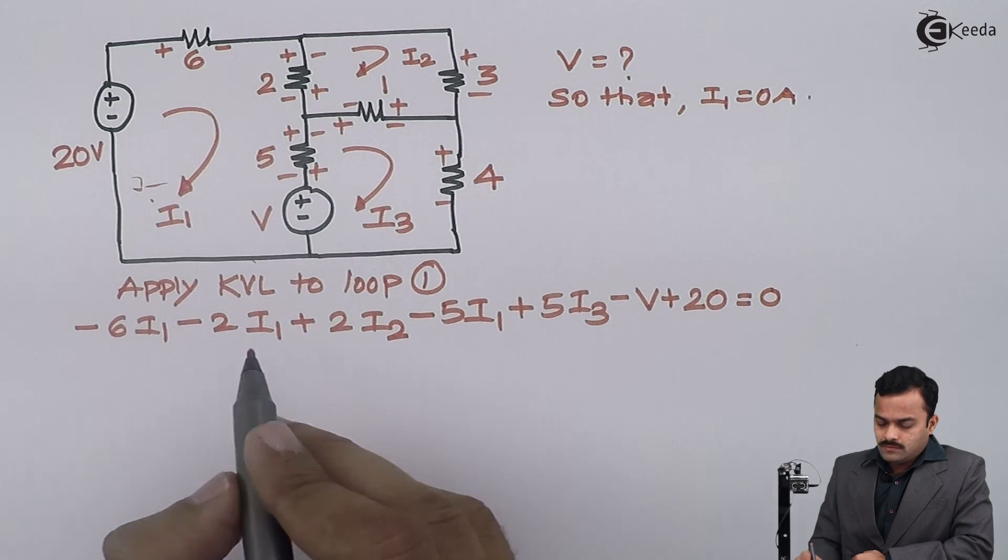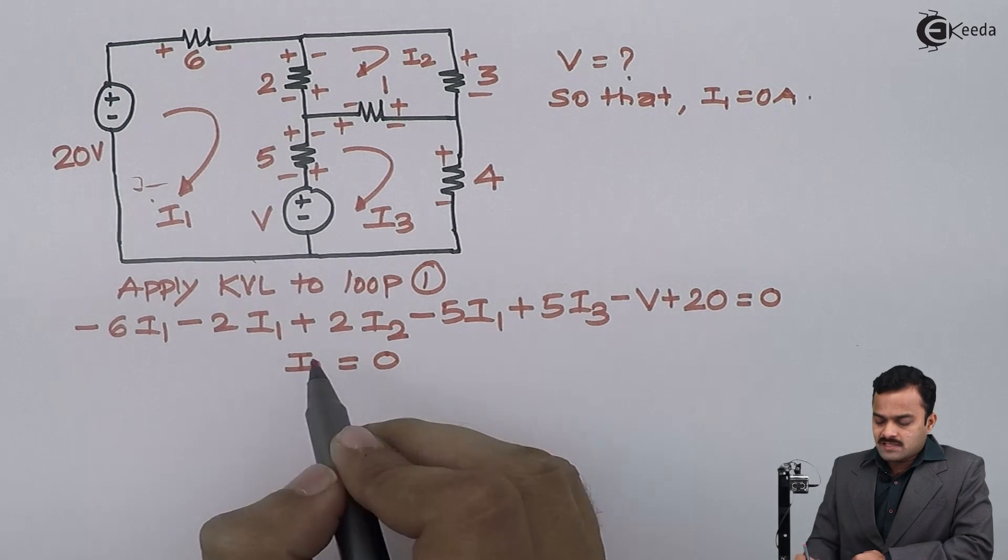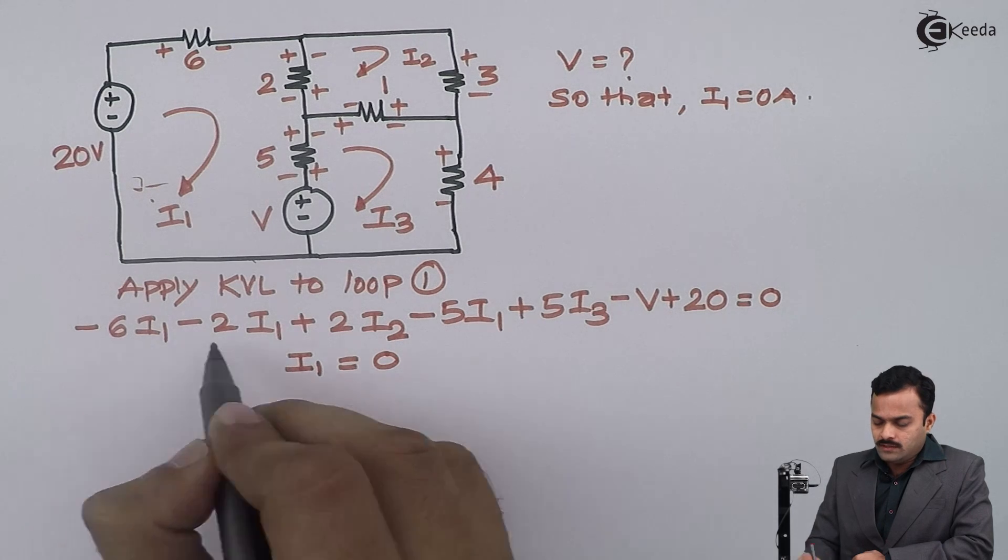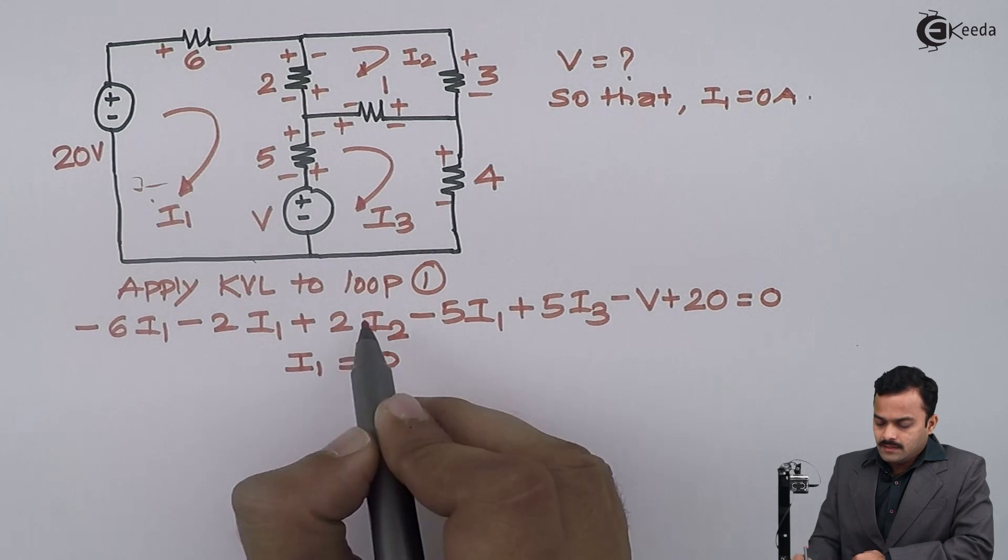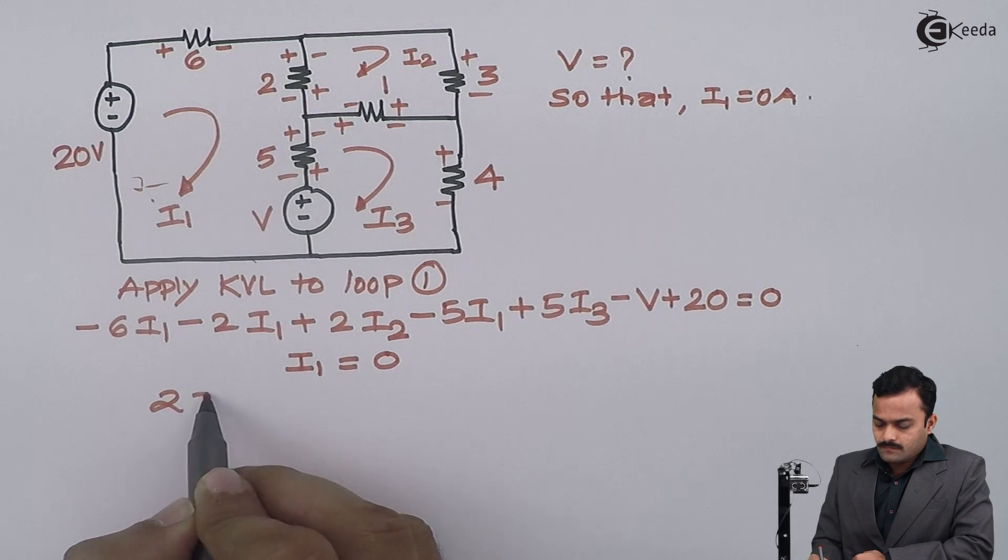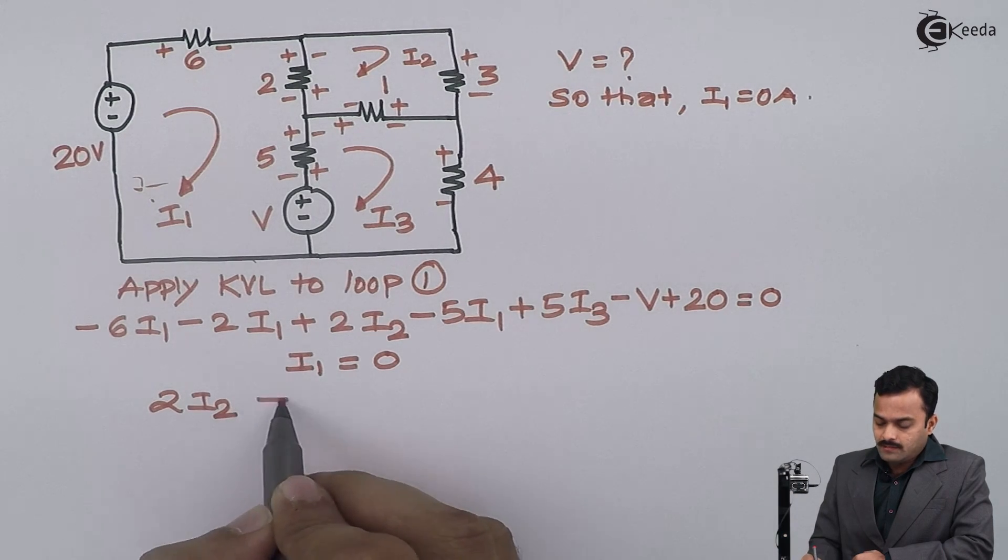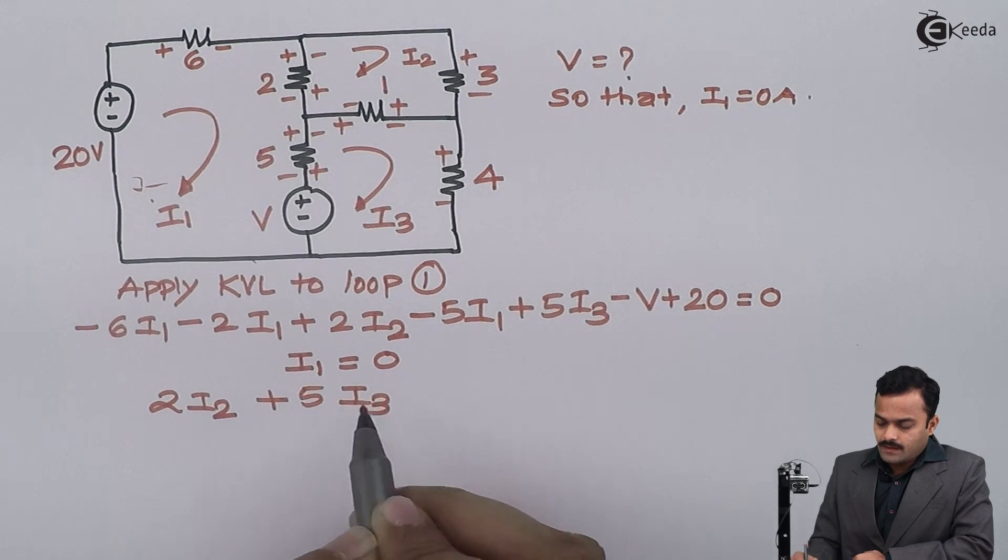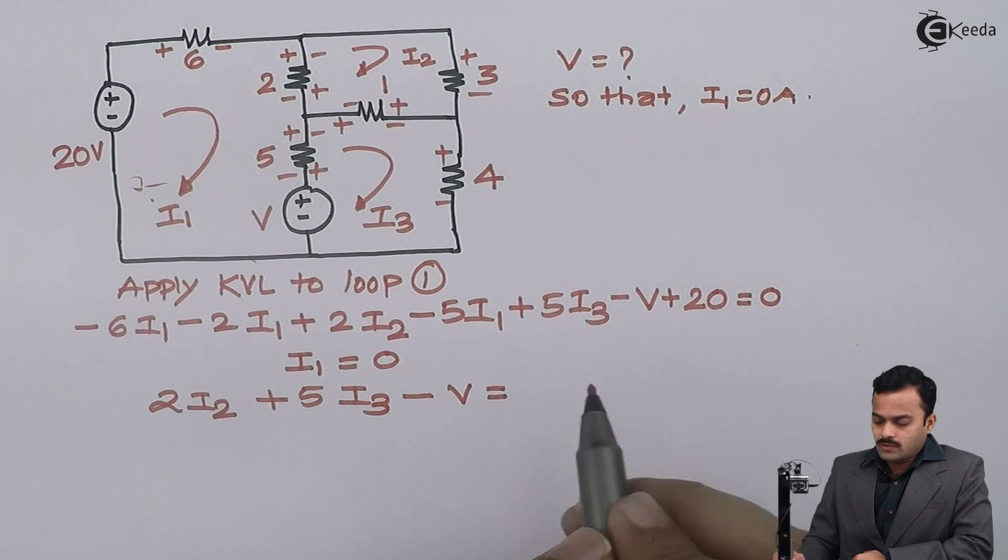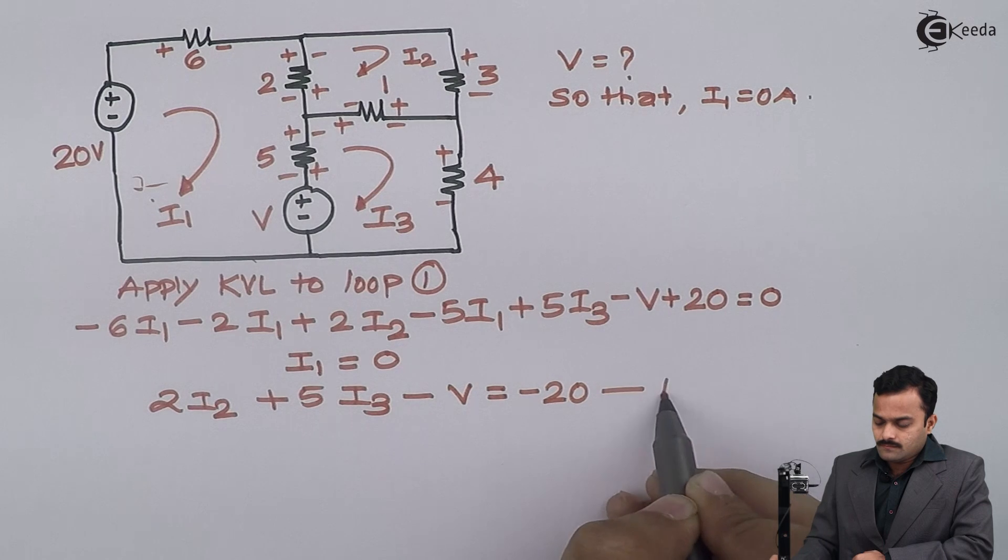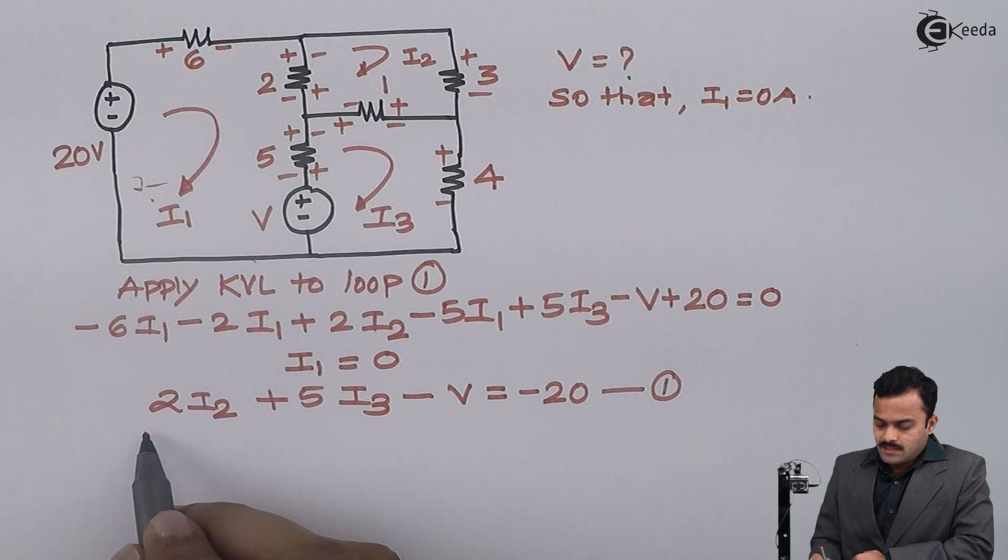Now we want current flowing through loop number 1 as 0, so I will substitute I1 equal to 0 in this equation. So this term will become 0, this term will also become 0, so I will get 2I2. Here also I1 is there, so this will also become 0. So only term left is plus 5I3 minus V. I do not know the constant 20. I will take it to the other side, minus 20. That will be equation number 1.